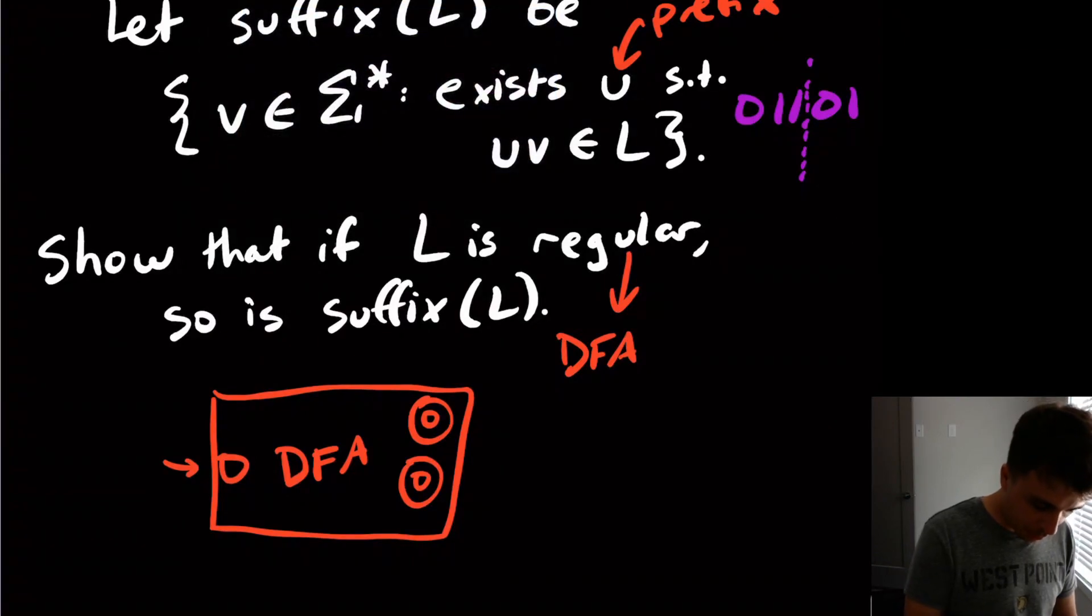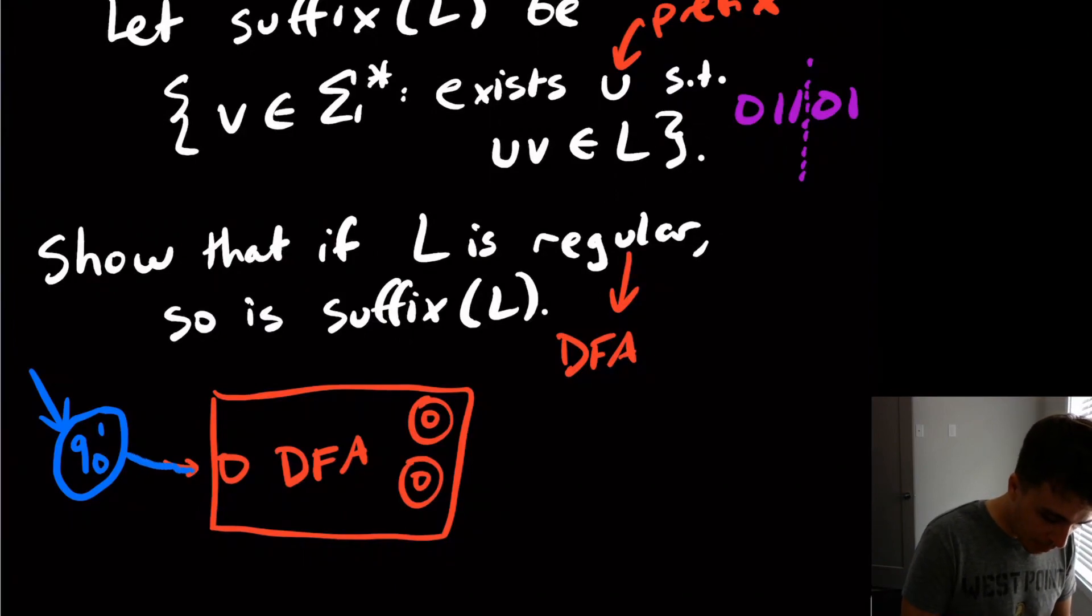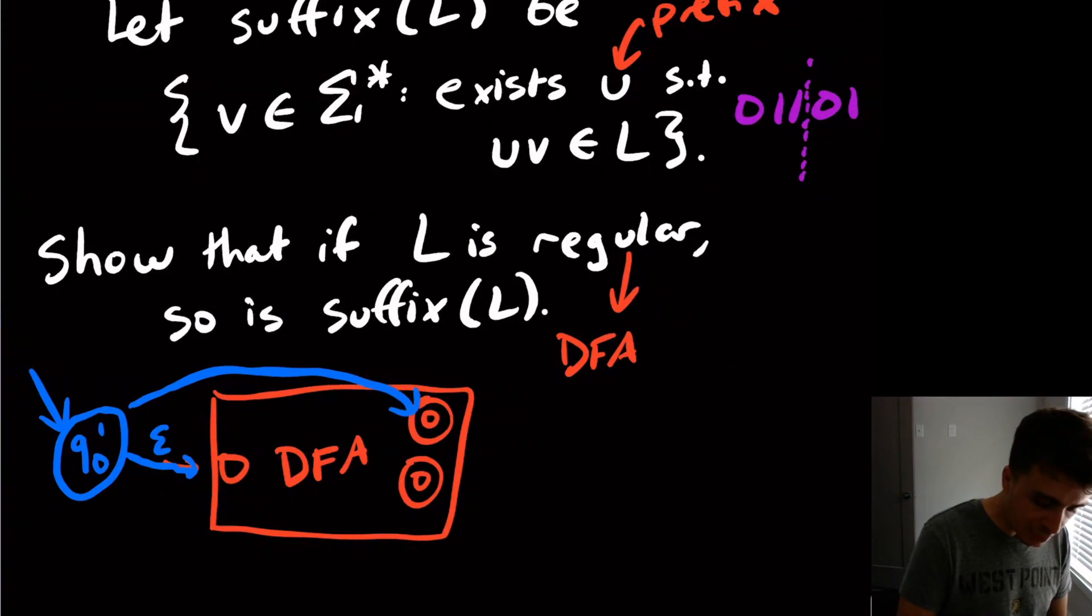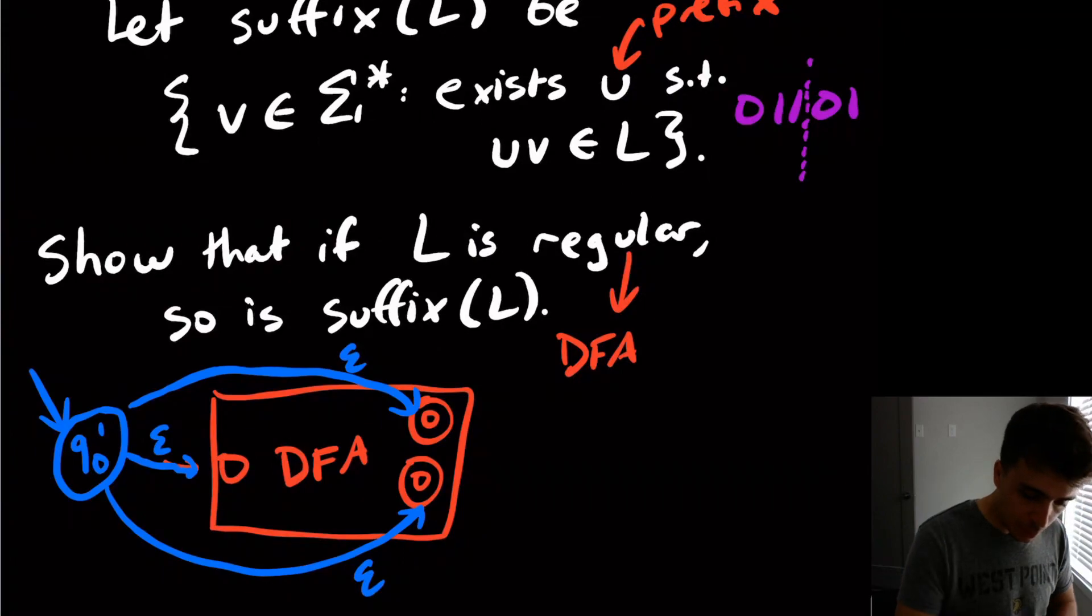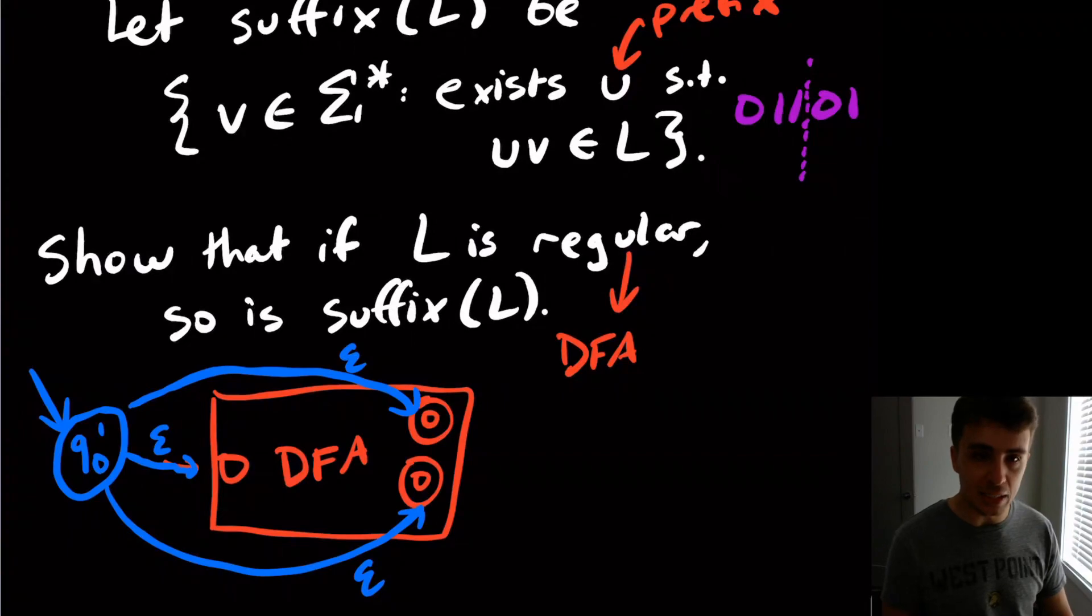What I'm going to do is I'm going to make a new state, I'm going to call q0 prime right here, which is going to be the brand new start state. And what it's going to do is it's going to have an epsilon transition to every state in the entire DFA. And there's no epsilon transition back to the q0 prime state. It only goes from the prime state into every state of the DFA. Why does this matter?